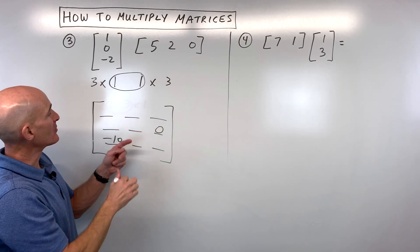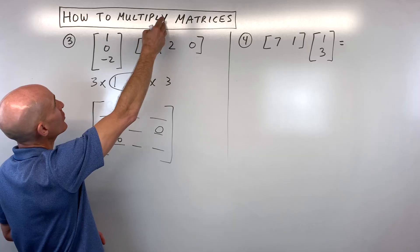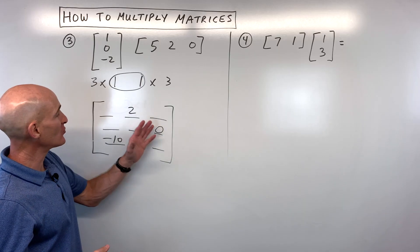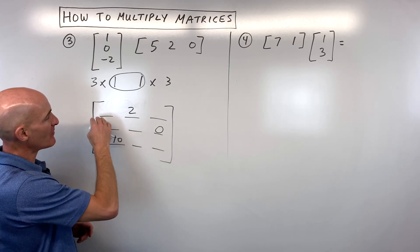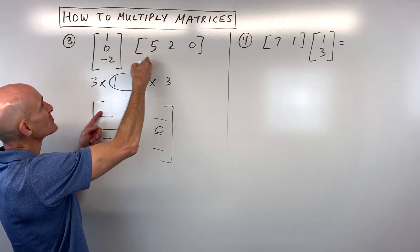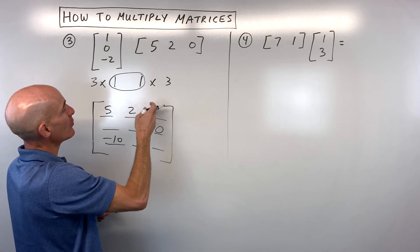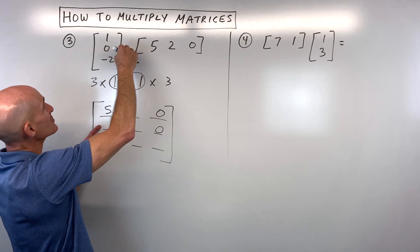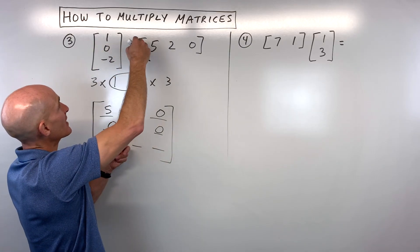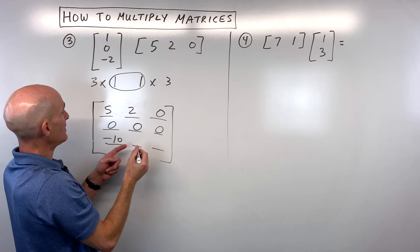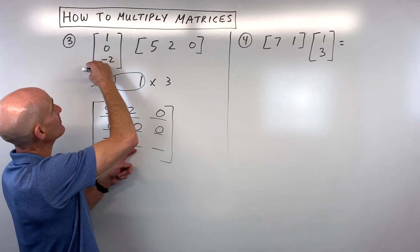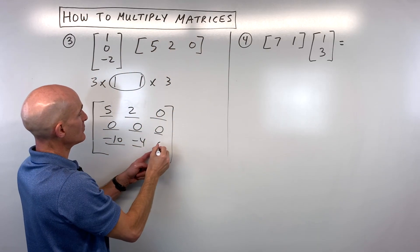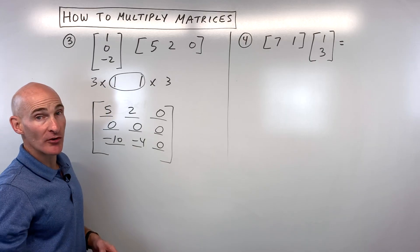If you want the first row, second column: first row times second column. Working left to right, top to bottom: first row, first column is five; first row, second column we handle here; first row, third column is zero. Second row, first column: zero times five is zero. Second row, second column is zero. Third row, second column is negative four. Third row, third column is zero. So that's our final resultant matrix.